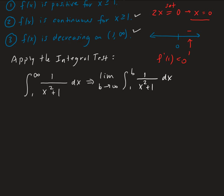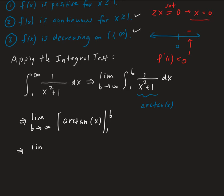The integral of 1 over x squared plus 1 is arctangent. So this gives us the limit as b approaches infinity of arctangent of x evaluated from 1 to b, which is the limit of arctangent of b minus arctangent of 1.